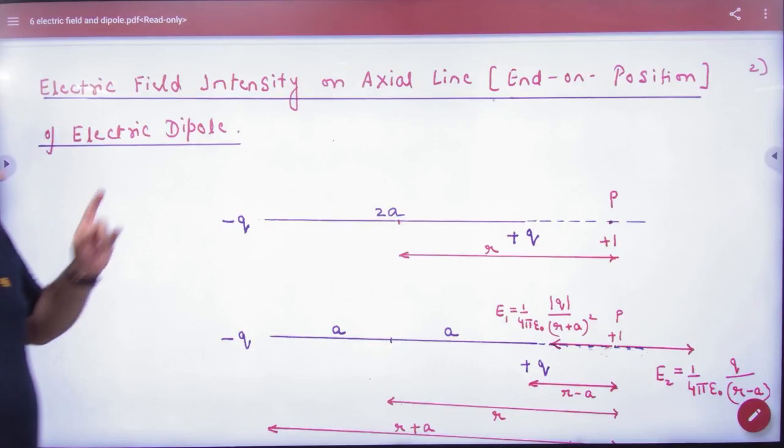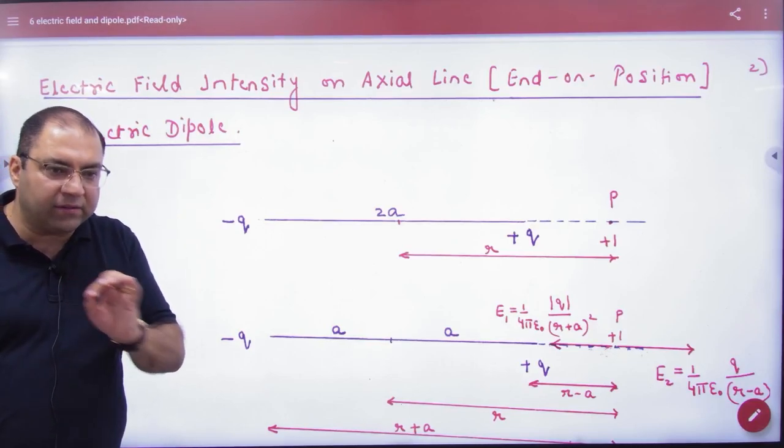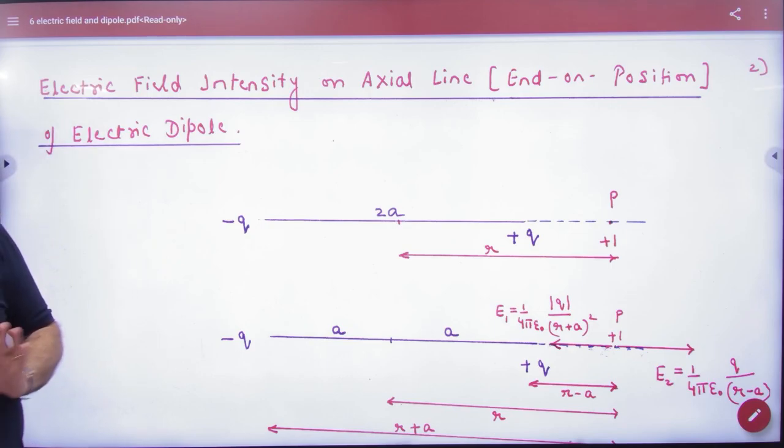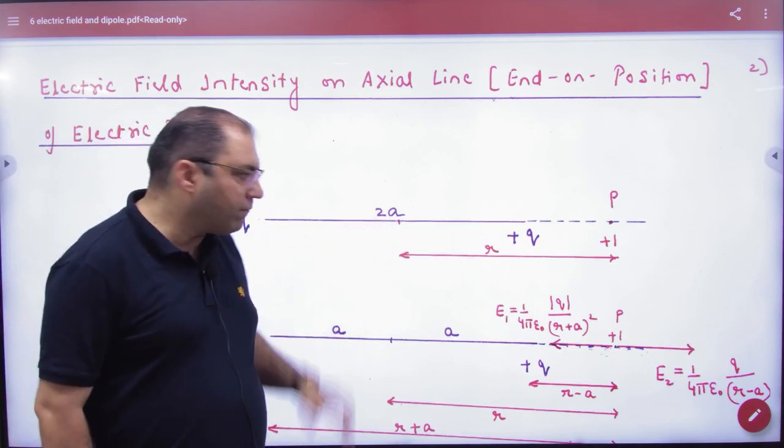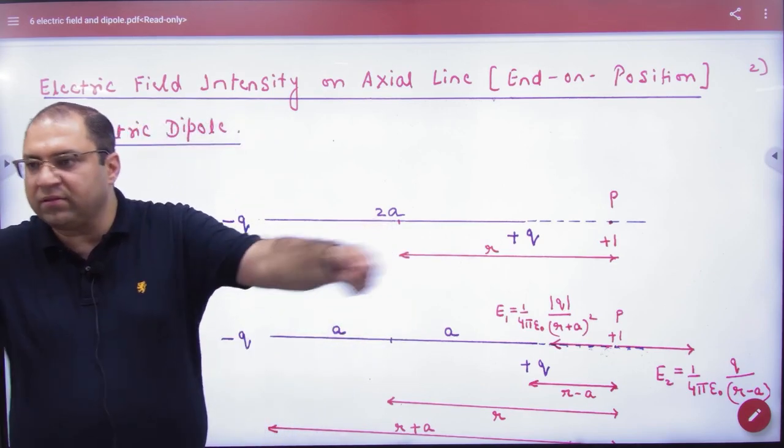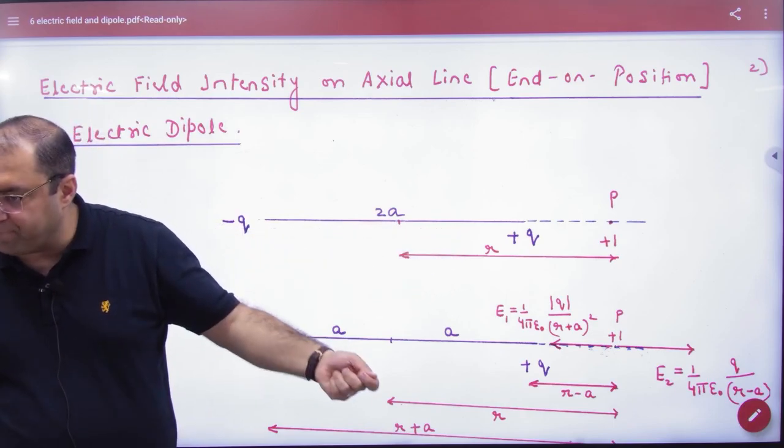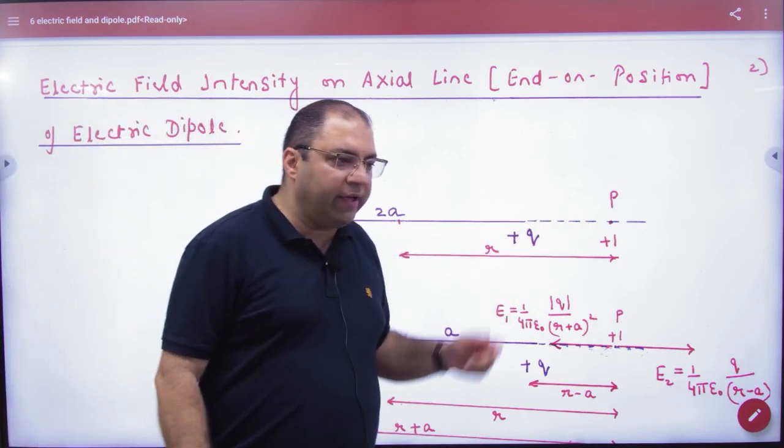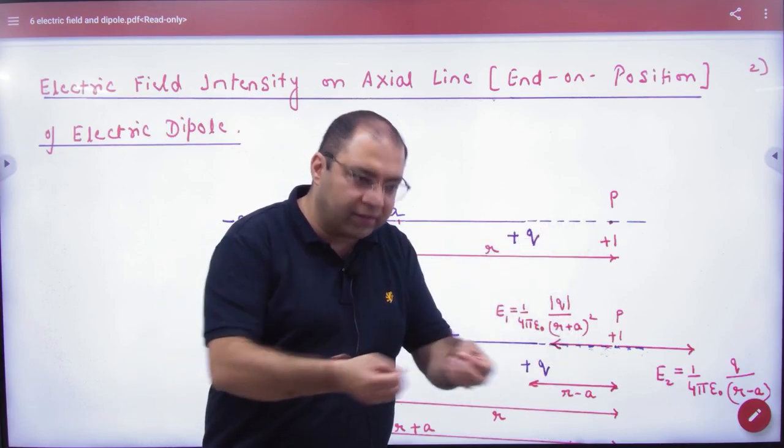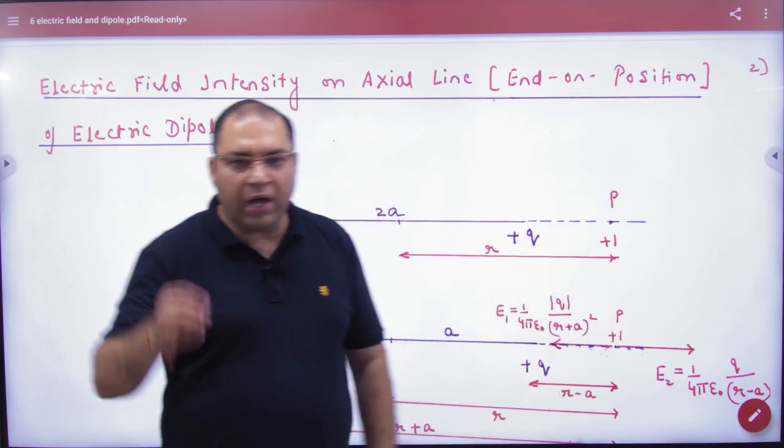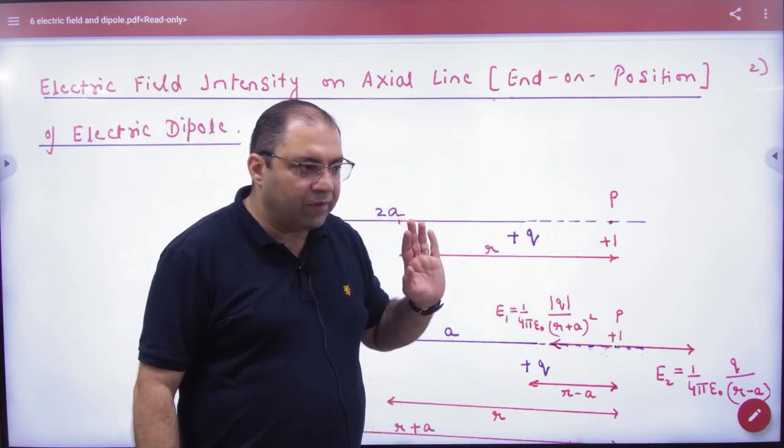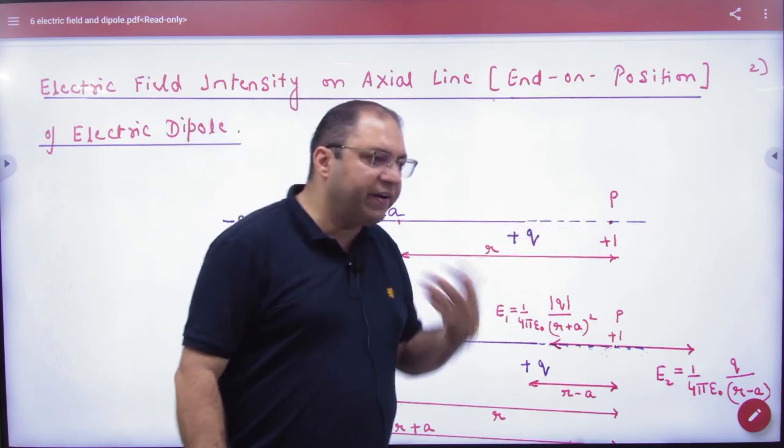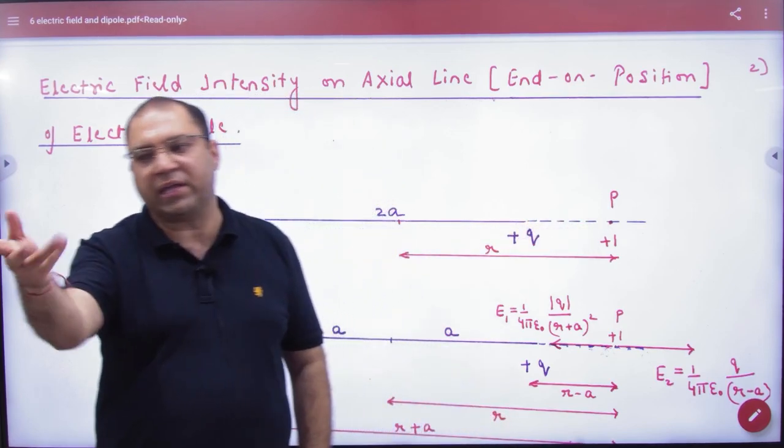Next topic is Electric Field Intensity on Axial Line. The axial line is what happens if minus q and plus q form a dipole, separated by a distance of 2a. The axis of this dipole is shown by the dotted line. This axis is called the axial line. So you can take any point that is put on the axial line. We will put these two charges on the dipole and calculate the electric field on it.